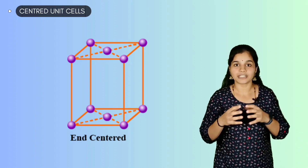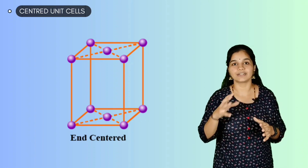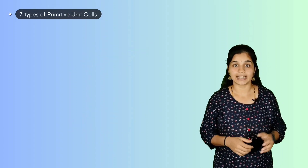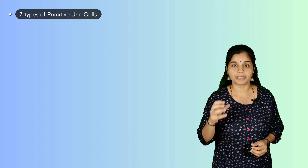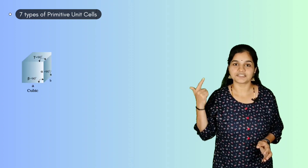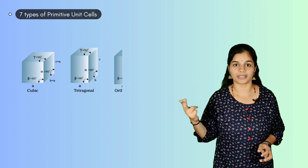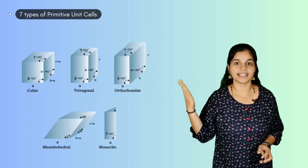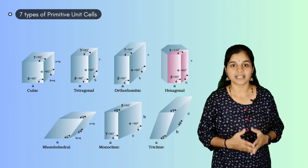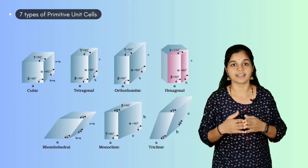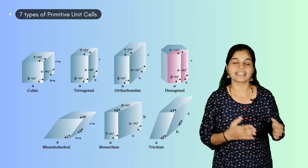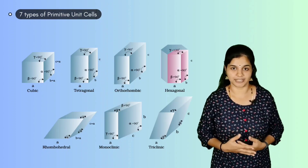When particles are present at the end faces, that particular centered unit cell is known as an end-centered unit cell. There are seven types of primitive unit cells: cubic, tetragonal, orthorhombic, monoclinic, triclinic, hexagonal, and rhombohedral. We shall discuss the edge lengths and axial angles with examples for each type of primitive unit cell.